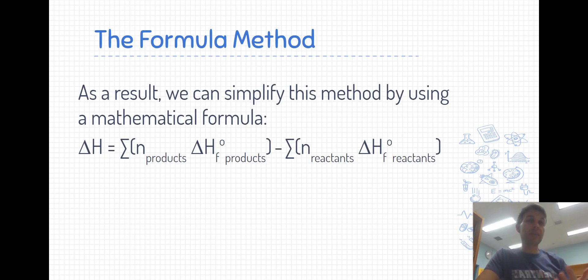As a result of these same two steps being applied in every Hess's Law problem using heats of formation, we can simplify this into a mathematical formula. Expressing this equation in words, to find a heat of reaction, we take the enthalpies of formation of the products, multiply them each by their molar coefficient in the target equation and sum them, and then from that we subtract